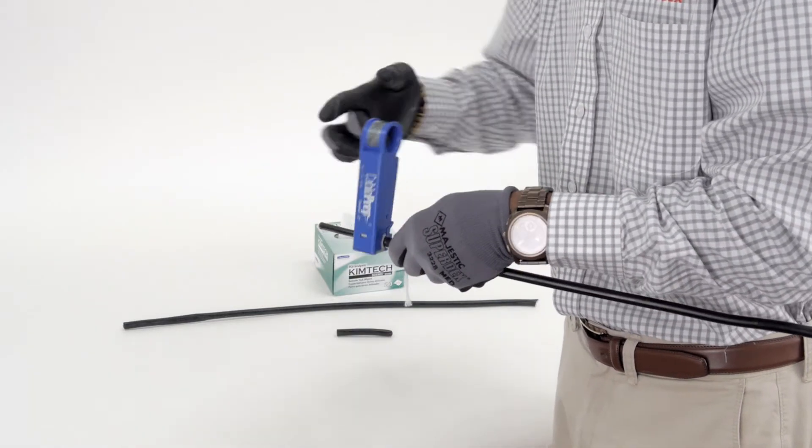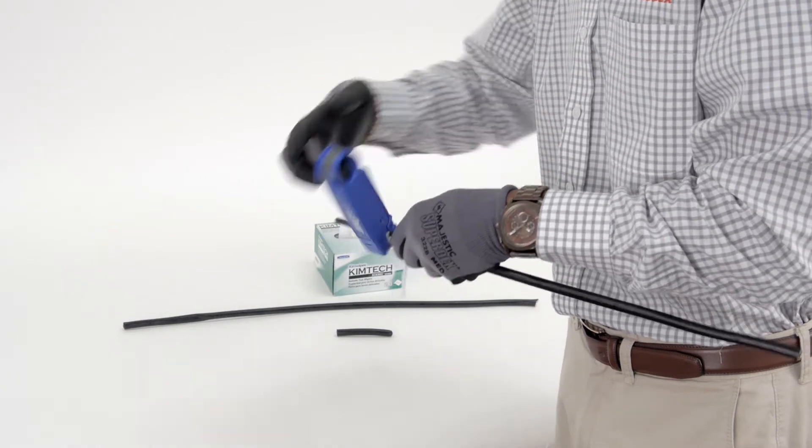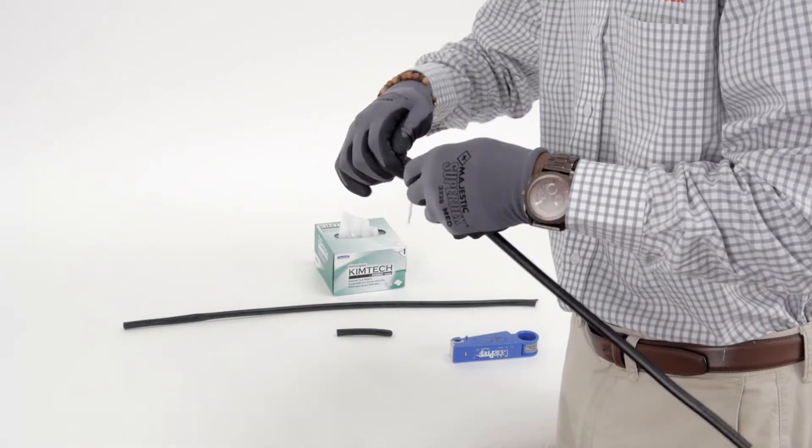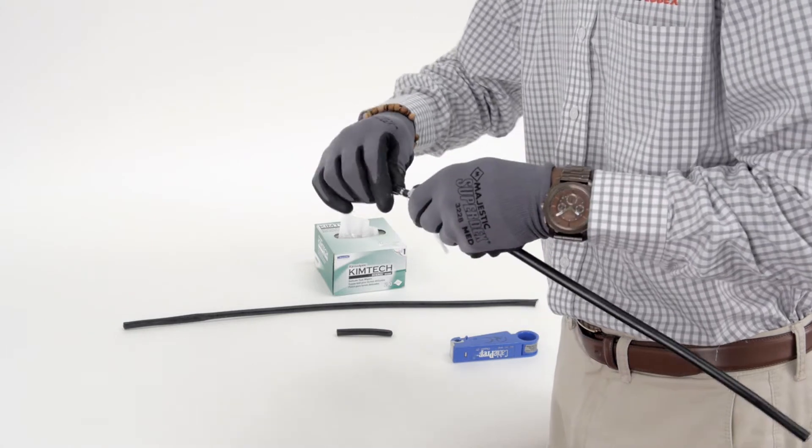To expose the pairs, ring cut and score the inner jacket. Flex the inner jacket about the ring cut and remove.